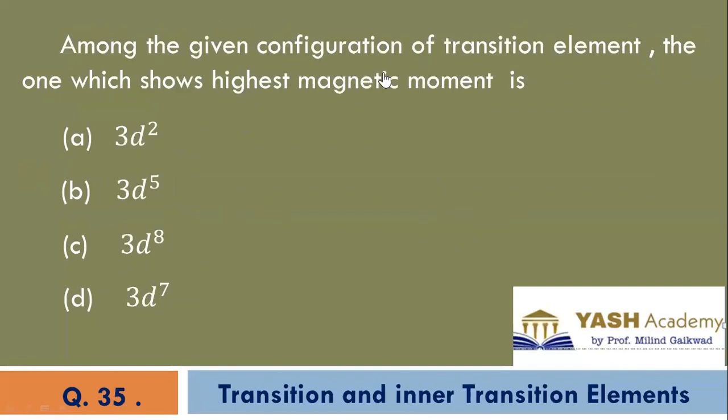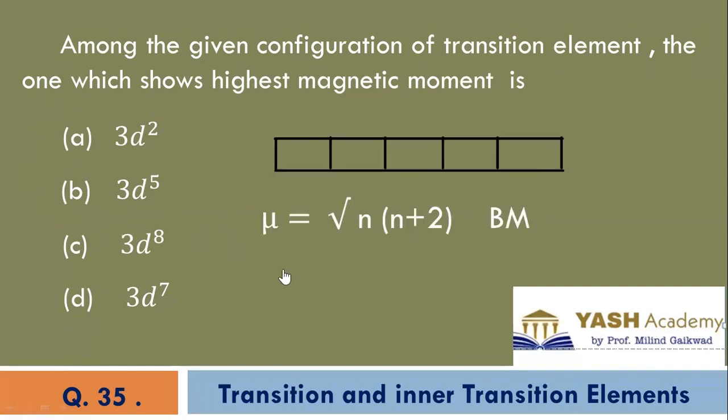Among the given configuration of transition element, the one which shows highest magnetic moment is. B is the correct option.